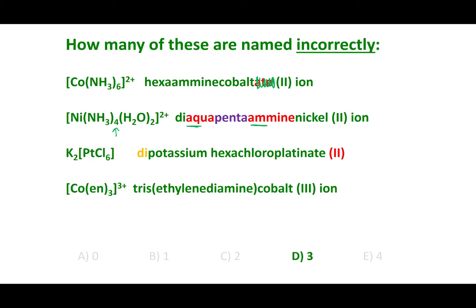In the third compound, there is a 'di' in front of potassium. When naming ionic compounds, you never put di or tri in front of the individual ions, so the di is unnecessary. Also, the platinate has the wrong oxidation state. The complex ion should carry a 2− charge. Chlorine has a charge of −1 and there are six of them, so platinum must be 4+, making the Roman numeral four. The last complex is written correctly. Note that EN is a common abbreviation for ethylenediamine.